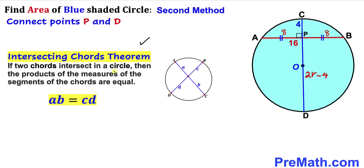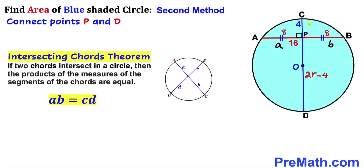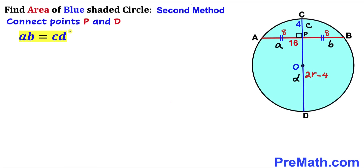Let's recall the intersecting chords theorem: if two chords intersect inside a circle, then the product of the measures of the segments of one chord equals the product of the segments of the other chord — that is, a times b equals c times d. In our case, segment a is 8, segment b is 8, segment c is 4, and segment d is 2r minus 4.